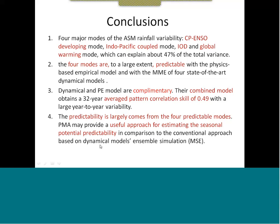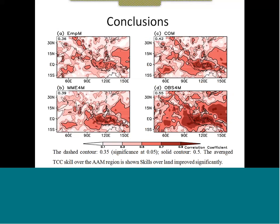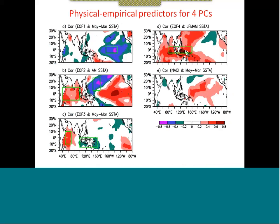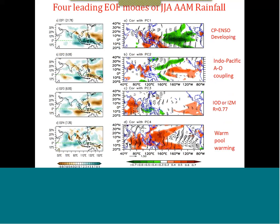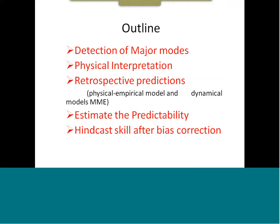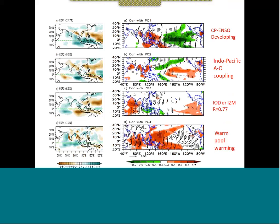A question from Tim Del Sol: can you give a few more details of the PMA method? Does this method assume that different models have the same EOFs? The answer is yes — the major modes are identified from observations, not from models. The PMA approach uses empirical analysis to determine major modes of variability, then tries to understand their origin and whether those patterns are physically meaningful, and whether we can establish PE models to predict them.